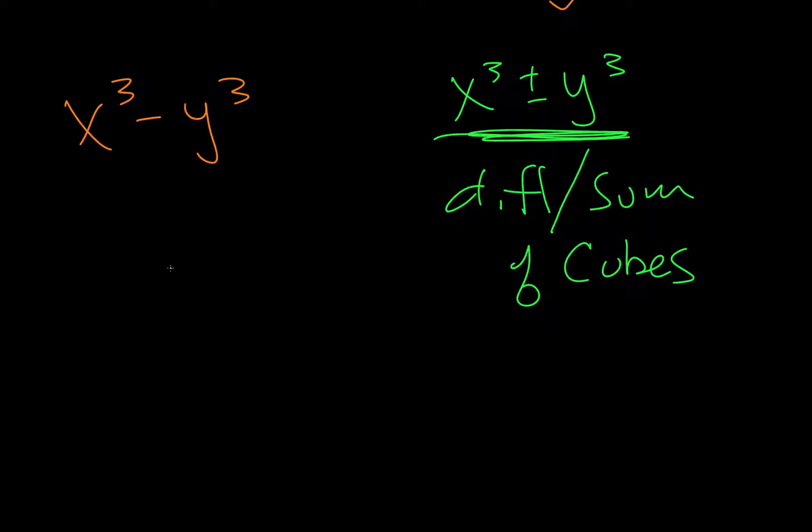I'll just write it down. So a cubed plus or minus b cubed equals a plus or minus b, then a squared minus plus ab, always positive, plus b squared. So this is the formula we're going to use.